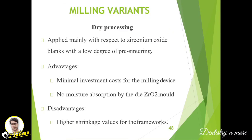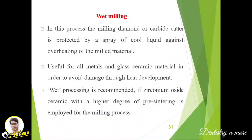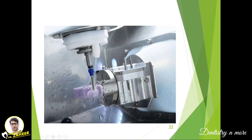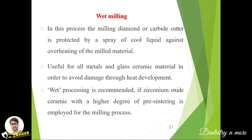There are two milling types: dry processing and wet processing. In dry milling, it is applied mainly to zirconium oxide blanks with a lower degree of pre-sintering. The advantage is minimal investment cost and no moisture absorption by the zirconium oxide mold, but the disadvantage is higher shrinkage values for the framework. In wet milling, the milling diamond or carbide cutter is protected by a spray of cool liquid to prevent overheating of the milled material. This is useful for all metals and glass ceramic materials to avoid heat damage. Wet processing is recommended when zirconium oxide ceramic with a higher degree of pre-sintering is used.